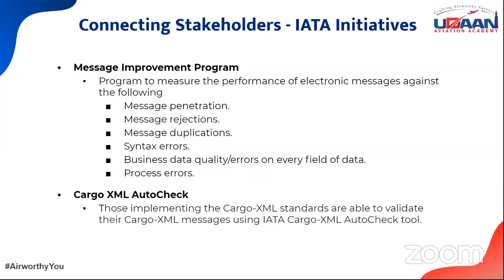Messages must be consumed by respective systems without rejections, duplications, or errors — what I see on my screen should be the same data seen on the recipient's screen. Earlier there were Type B messages or CIMP — Cargo Interchange Message Protocols. Though those messages are still in use, their enhancement was effectively stopped in 2014, and now XML standards are used to transmit the same set of messages to different stakeholders. An auto-check of the XML message ensures the format is standardized by IATA and can be consumed by any system to exchange messages.